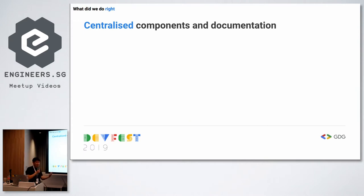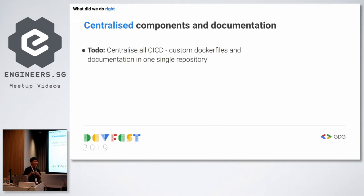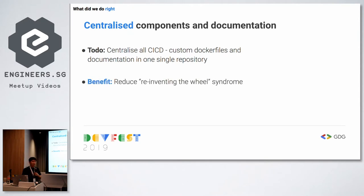Another thing we did right was centralizing our knowledge. Previously each team built their own custom CI steps and builders, resulting in duplicated functionality and tribal knowledge scattered across the company. When moving to Cloud Build, we decided to centralize all implementation — putting shared Docker files for custom build steps in a single GitHub repository with documentation. This eliminates reinventing the wheel: if someone needs the same functionality a year later, the document already exists.